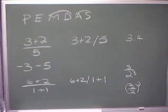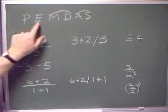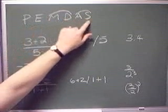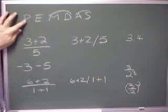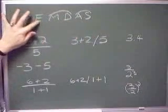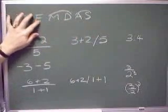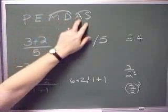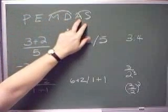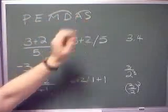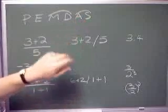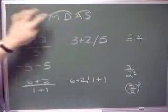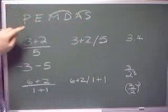You might have remembered it from another class as 'Please Excuse My Dear Aunt Sally,' which means you do parentheses first, then exponents, then you multiply and divide from left to right, and then you add and subtract from left to right. The calculator knows this, so if you don't override anything, it's going to follow these order of operations.